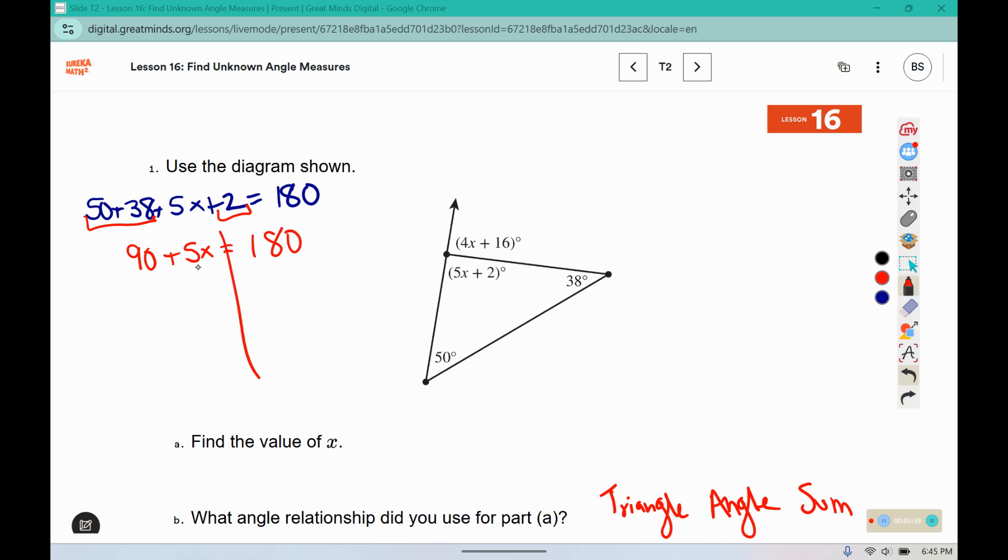I have a variable on the left so I'm going to move all my numbers towards the right side. 90 minus 90 is 0. I still have the 5x. 180 minus 90 is 90. And then I'm dividing both sides by 5, which is 18.